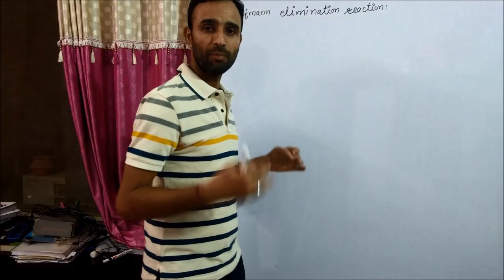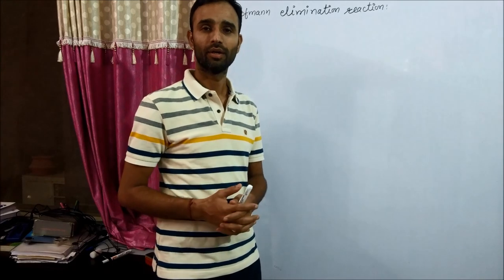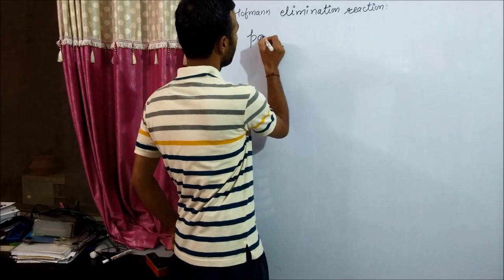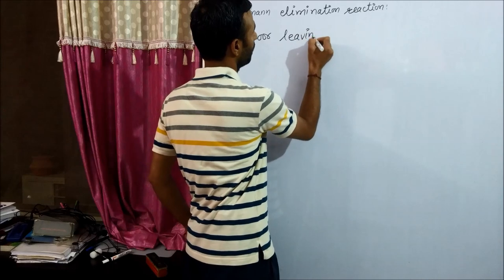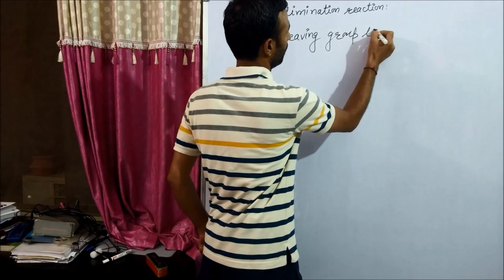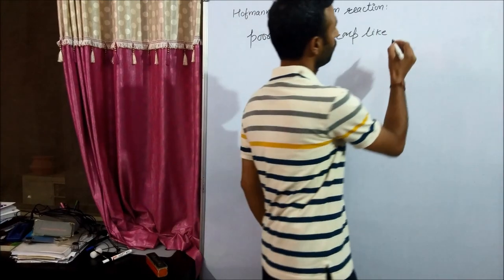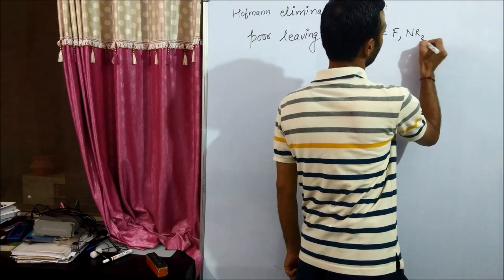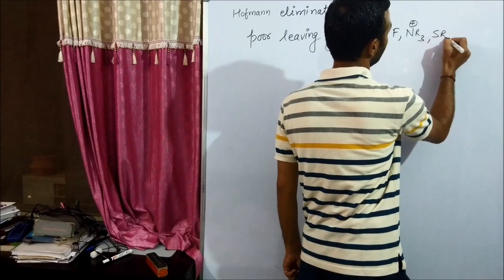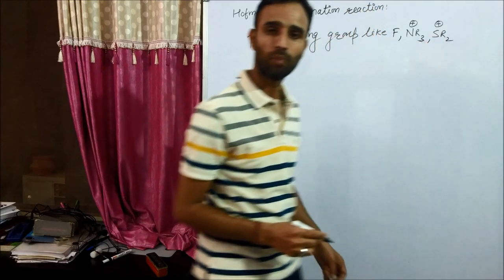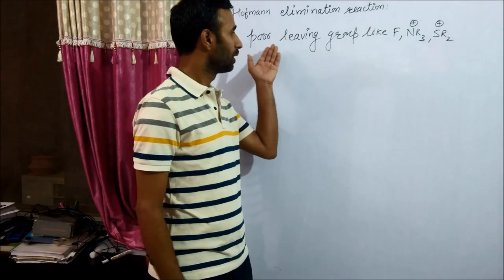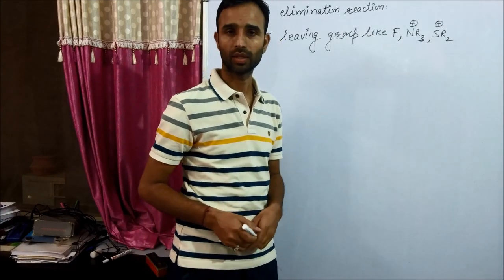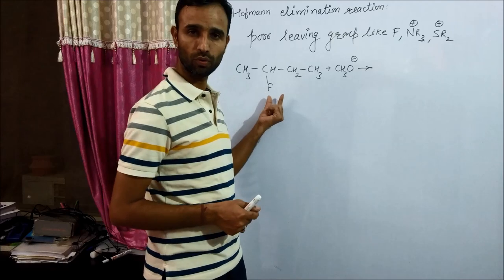Case number two: when the leaving group is a poor leaving group. A poor leaving group is like fluorine, or NR3 positive, or SR2 positive. For example, we have 2-fluorobutane with methoxide ion.